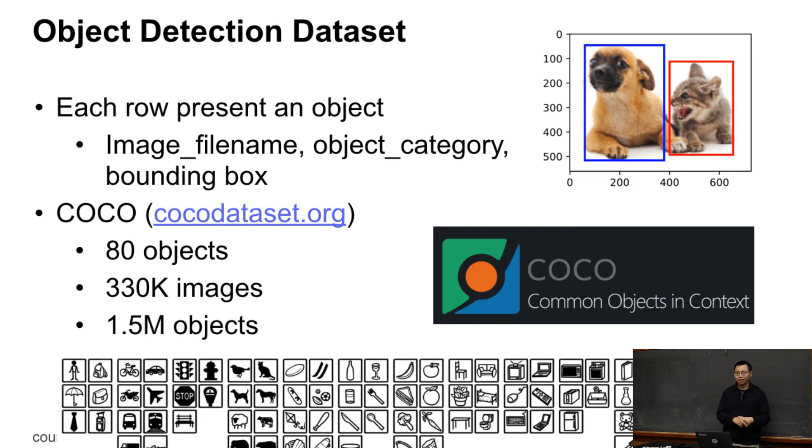What object detection data looks like is that now each row is not just the image and the objects you have. Each row identifies an object in the image. You can specify the image file name, the object class you have, and the bounding box as the four numbers of the object. If you have few images, you may have ten times more objects, and each object is a training example.